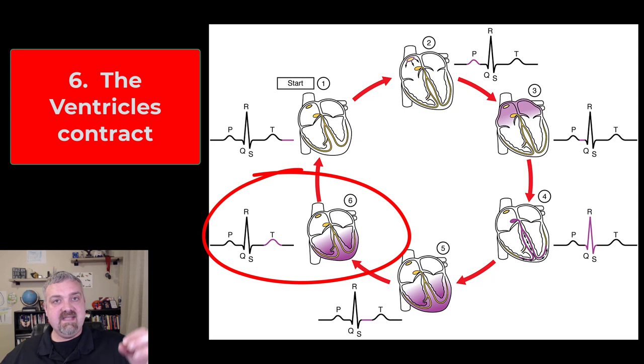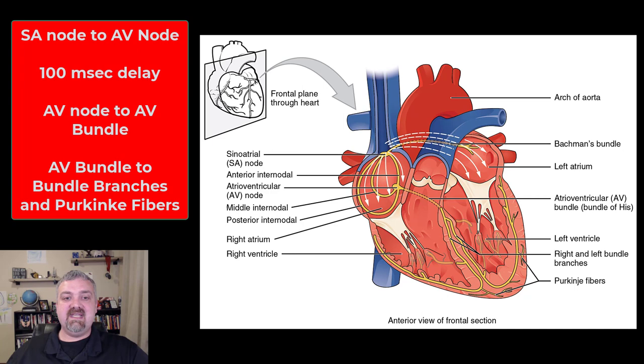Now, an important thing here to note is that the reason that the stimulus goes all the way to the apex of the heart and then turns around, that means that the heart muscles are going to depolarize and contract from the bottom up. So imagine wringing out a tube of toothpaste. You're going to squeeze it from the bottom and squeeze the whole heart up and wring it out, wring every drop of blood that you can out of the heart.